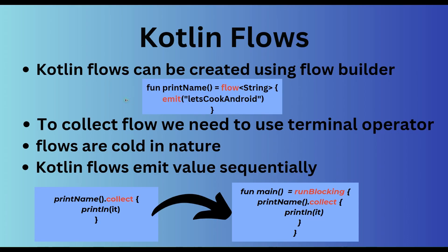We are back to our slide. We have already learned how we can create a flow builder. This is the syntax: first we write `flow`, then specify the type of value we want to return. This `flow` function comes from the flow builder API. To emit any value from this flow builder, we use the `emit` function. In our case we write `emit("Let's cook Android")`, which is of type String since we specified String as the return type.